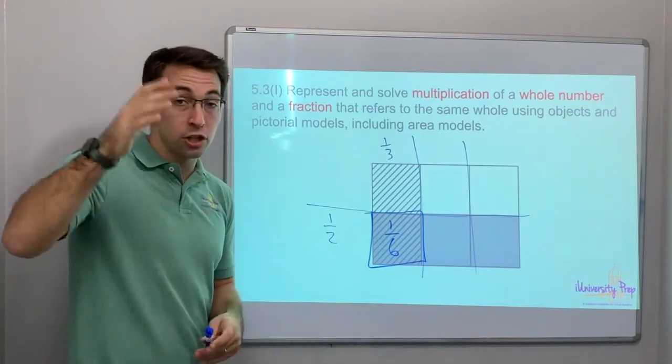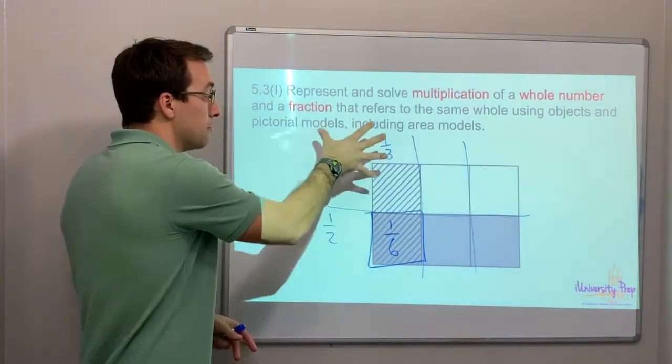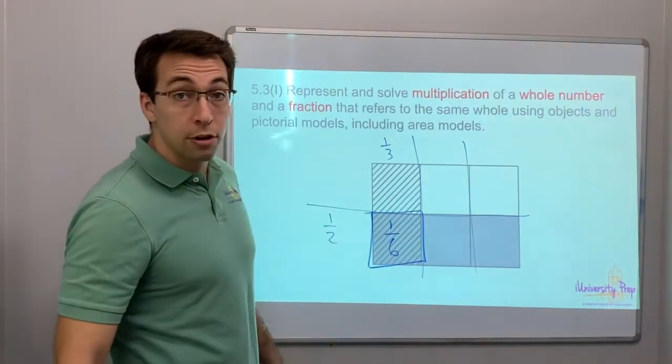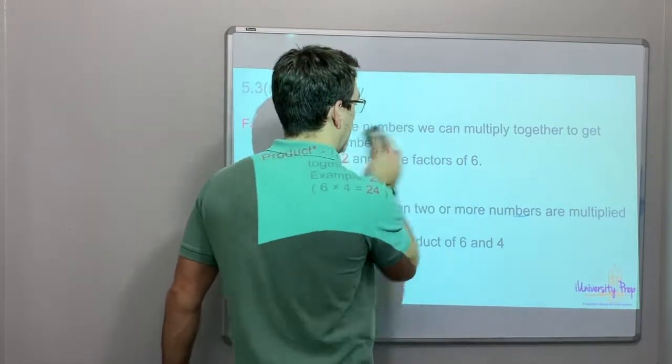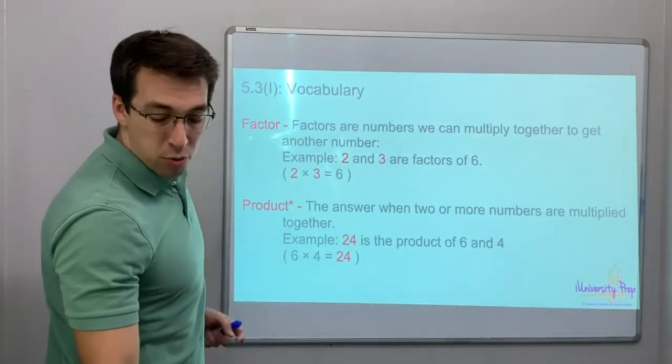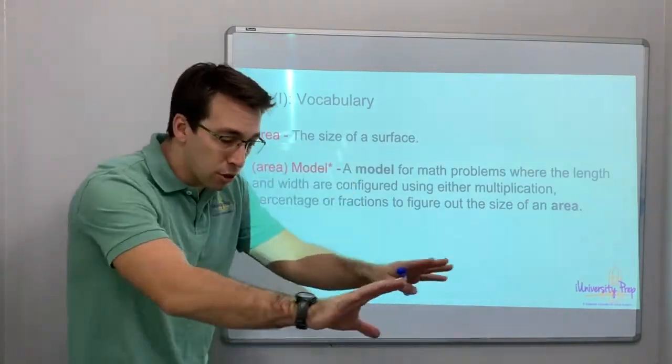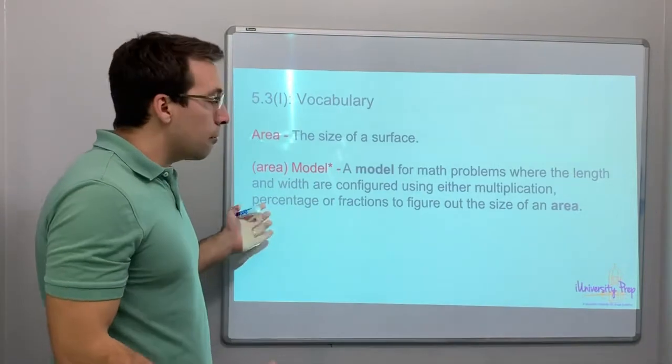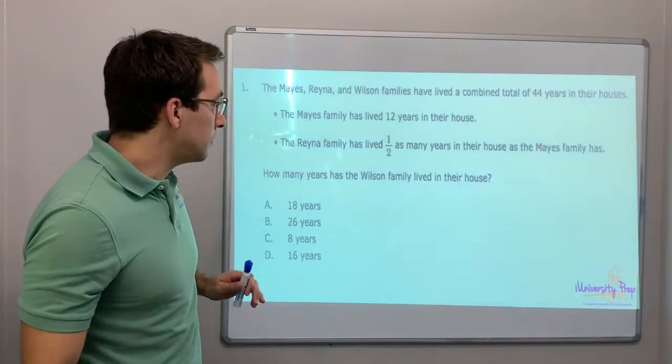So we're dealing with multiplication of fractions and multiplication of fractions and a whole number using models. See how that works? One-third times one-half equals one-sixth. You've got to know factor, you've got to know product, just different vocab. The area, that's the surface area, and then the area model, the grids and graphs.